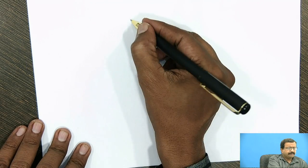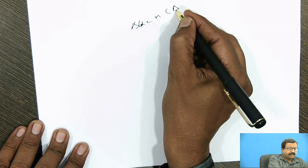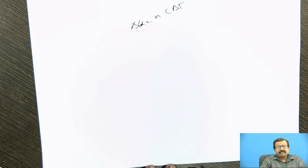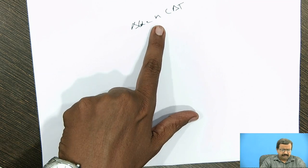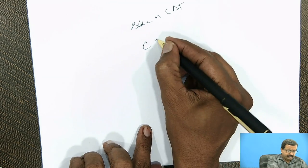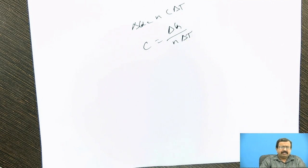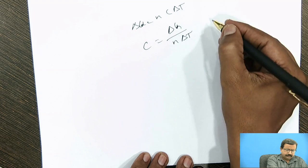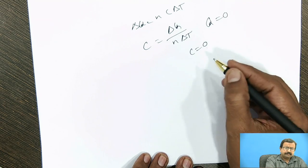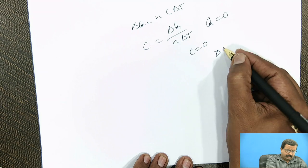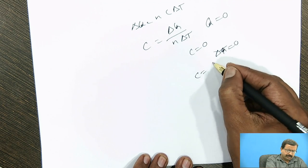Now specific heat is defined as delta q is equal to nC delta T. Now the question is, when we define this delta q as nC delta T, so we write C is equal to delta q upon n delta T. Now, if we do not supply heat, if delta Q is zero, then we get C is equal to zero. If delta T is equal to zero, that is isothermal, C is equal to infinity.